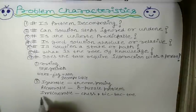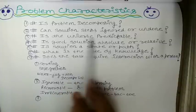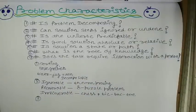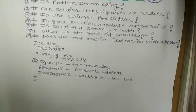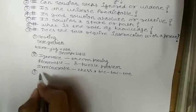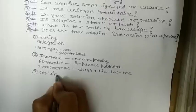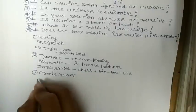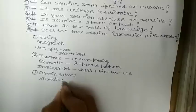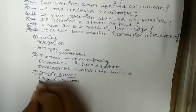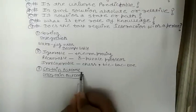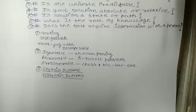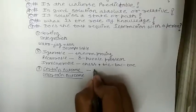After this, the third characteristic: is the universe predictable? It means: is the problem's universe predictable? Here we have two types of problems. One has a certain outcome, and the other has an uncertain outcome. For problems with a certain outcome, the outcome is fixed. We know our destination or goal, and they are predictable. The example of this is the 8-puzzle problem, as we know our destination or goal. We can also take the Water Jug problem.